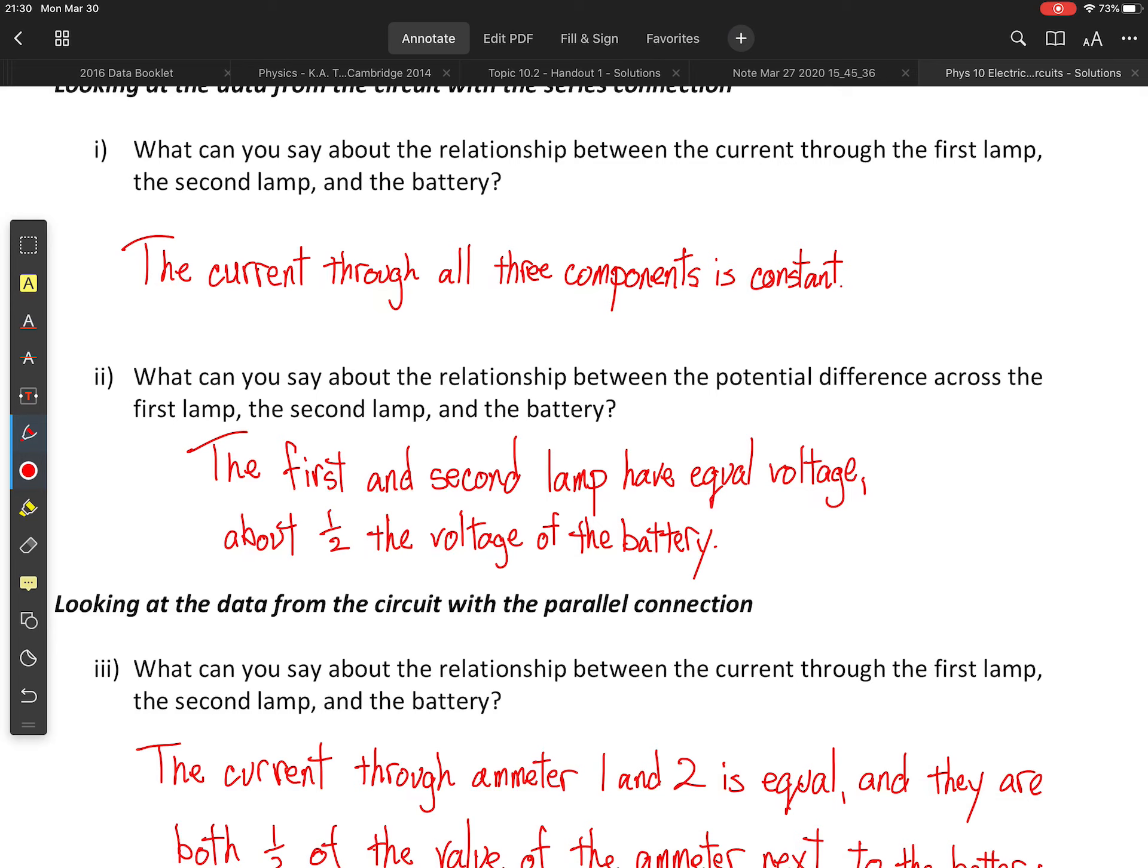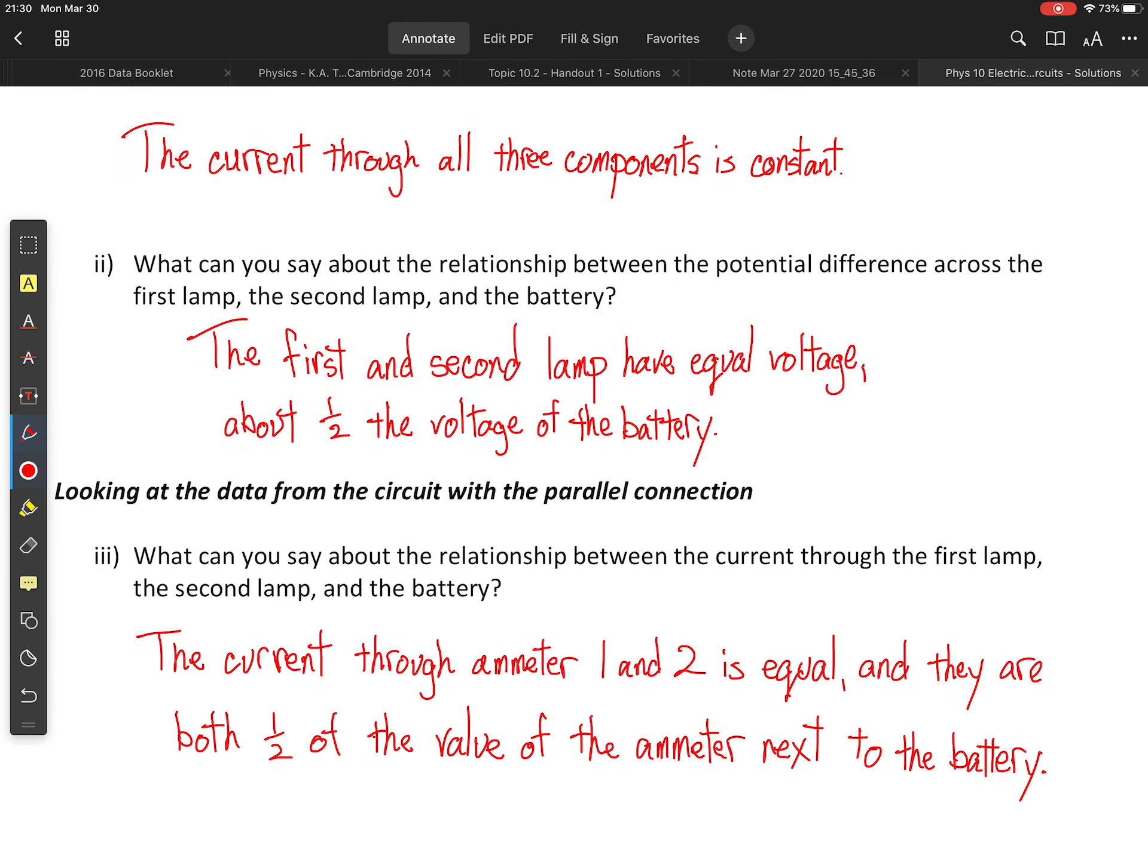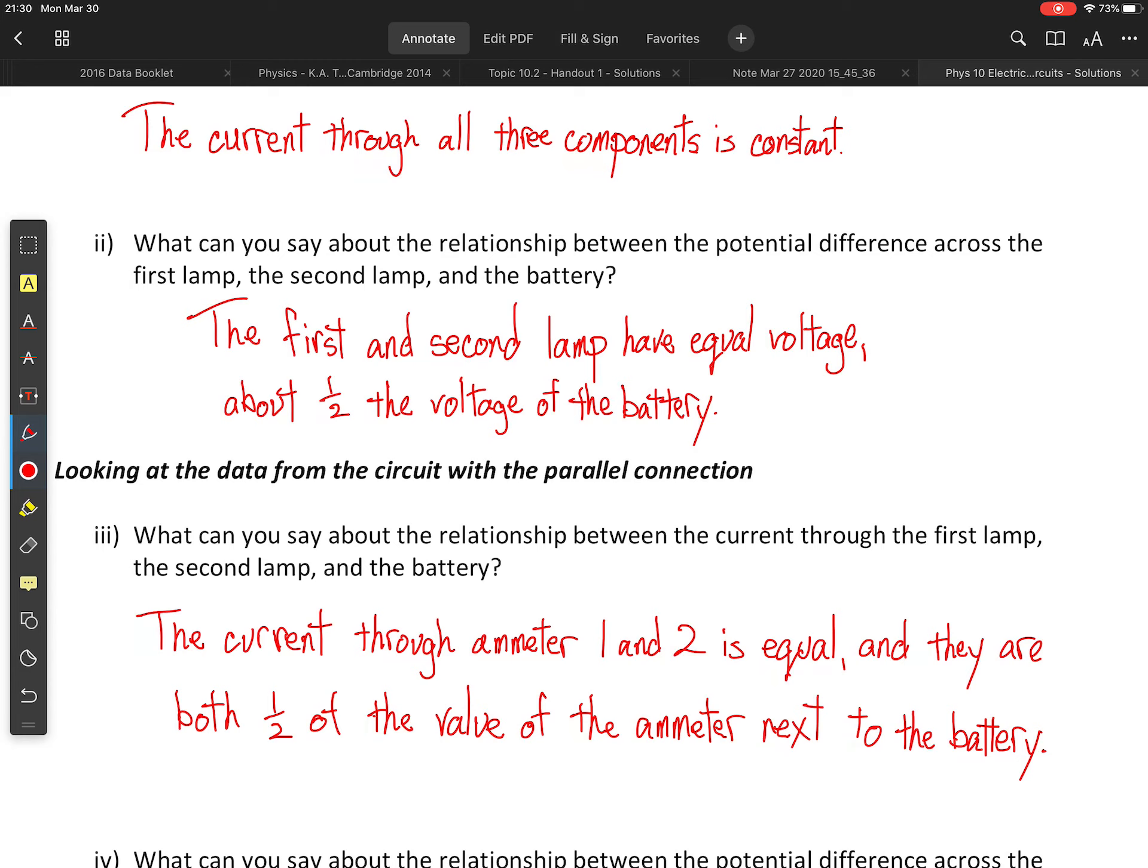What is the relationship between potential difference across the first lamp, the second lamp, and the battery? The first and second lamp are going to have equal voltage, and that voltage will be about one half of the voltage of the battery. I say about because, again, some voltage may be consumed by the wires, but it would be a very small amount. Okay, so depending on how you set up your circuit and the resistance you used for wires in the simulation, you may find that the voltage was either exactly half or maybe just slightly less.